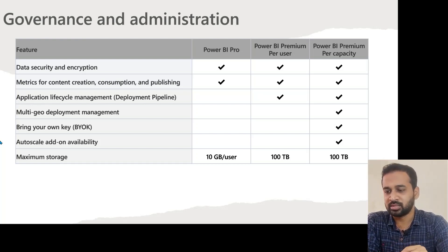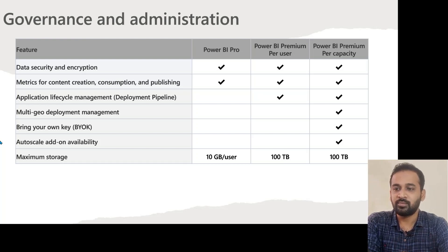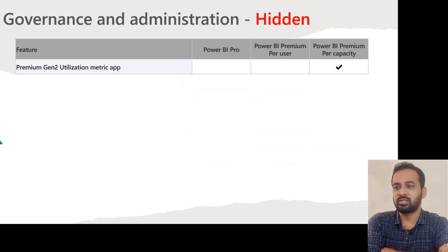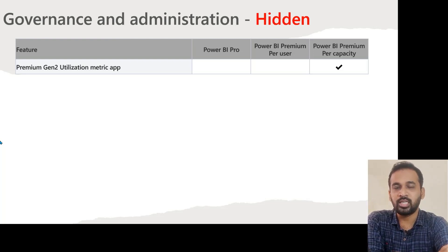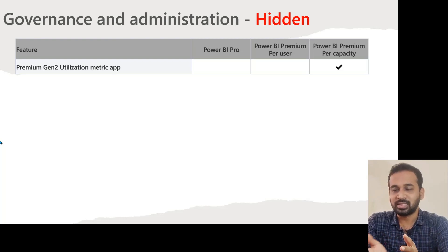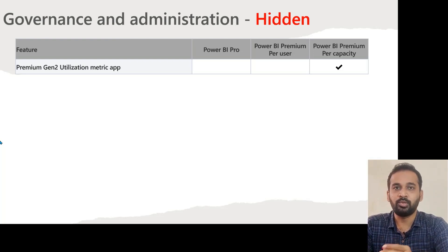Make sure you read the documentation properly before using these features. Maximum storage per capacity: 10 GB per user for Pro, 100 TB for Premium Per User, and 100 TB for Premium Per Capacity. For governance and administration hidden features: the Premium Gen 2 utilization metrics app can be installed from the Power BI app store. For usage metrics analysis, this is a tenant-level feature available only if you have Premium Per Capacity — Pro and Premium Per User cannot use it.